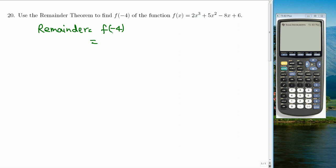Just plug in negative 4 so 2 times negative 4 cubed plus 5 times negative 4 squared minus 8 times negative 4 plus 6. Now use your calculator. So 2 times negative 4 cubed plus 5 times negative 4 squared minus 8 times negative 4 plus 6. That gives negative 10.